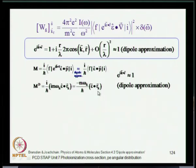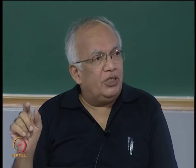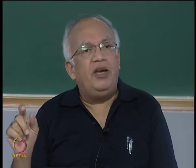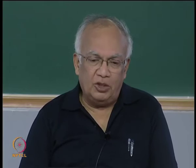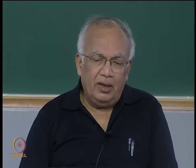If you take an expansion of e^(ik·r), then you have higher order terms in r/λ, so you can truncate this series for large wavelengths. For large wavelengths, r/λ becomes small and higher powers can be ignored. Taking the leading term gives e^(ik·r) = 1, which is known as the dipole approximation. This gives the matrix element of the gradient operator in terms of the matrix element of the position operator.